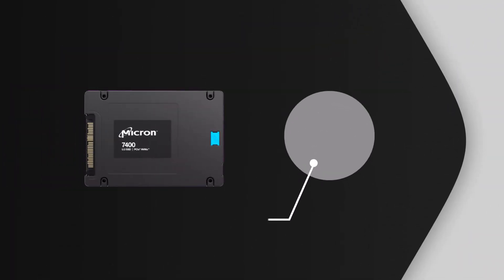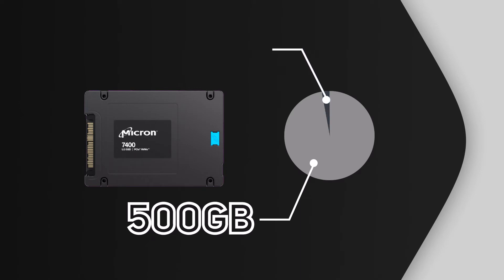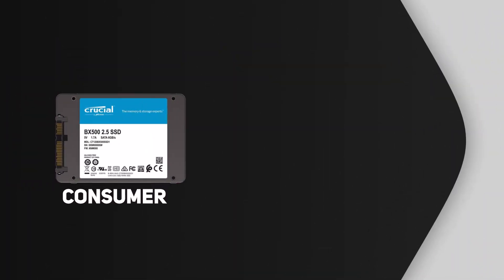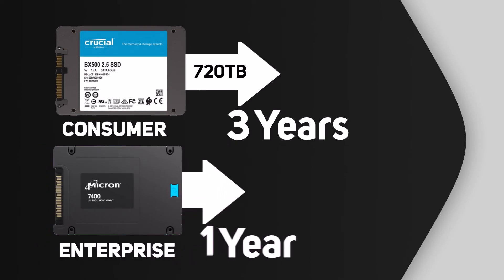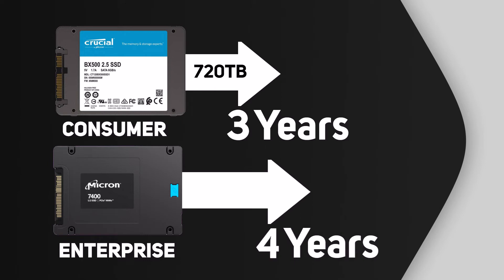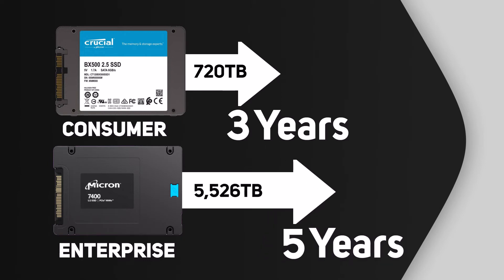To prevent drives from slowly having less and less storage capacity, SSD manufacturers include additional cells beyond the advertised capacity, known as over-provisioning. For example, an SSD sold as 500GB might actually have 512GB of space, with the extra 12GB set aside as spares for use later as cells wear out. Enterprise SSDs often have much more over-provisioning than consumer SSDs. For example, a 2TB consumer SSD has a rated endurance of 720 terabytes over three years, whereas a 1.92TB enterprise SSD has a rated endurance of 5,256 terabytes over five years — over four times as much.